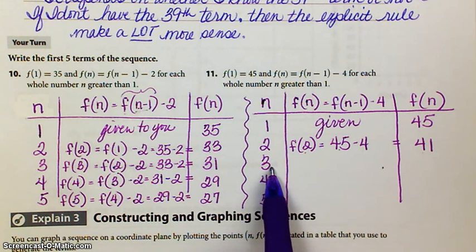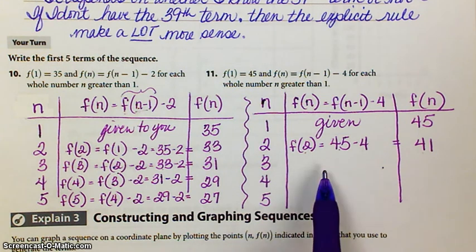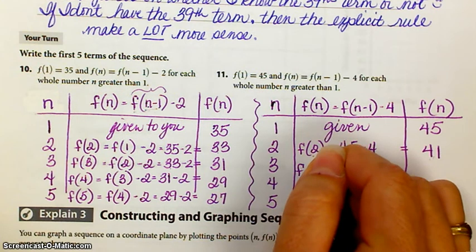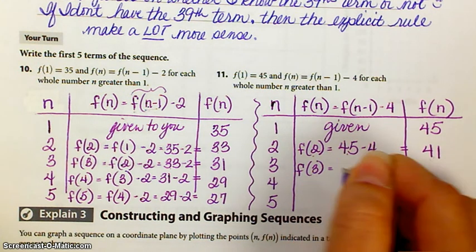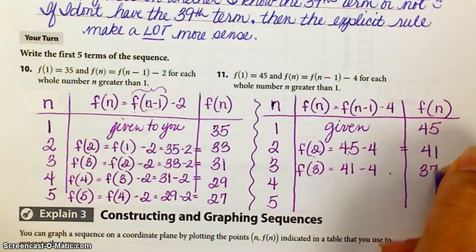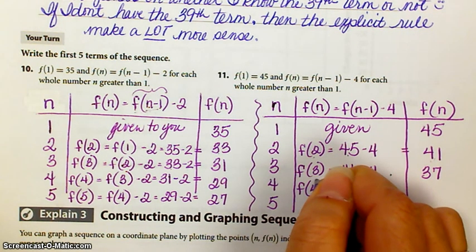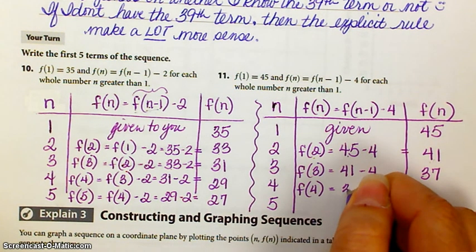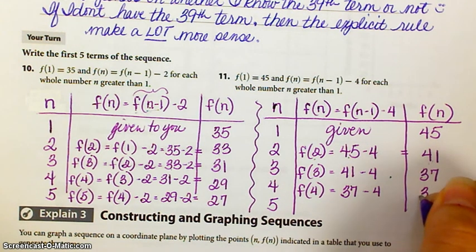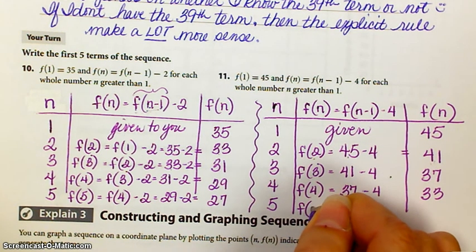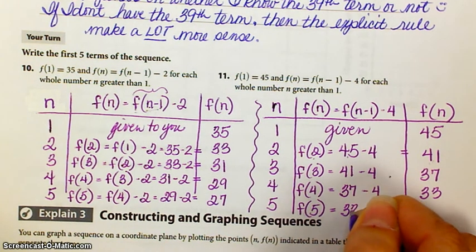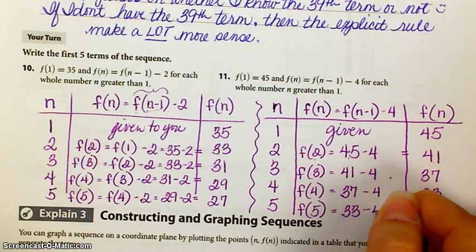The function value of the third term is going to be the value of the second term minus 4. 41 minus 4, and that's going to give us 37. The function value of the fourth term is going to be the previous term value minus 4. Function value of the fifth term is going to be the previous value minus 4.